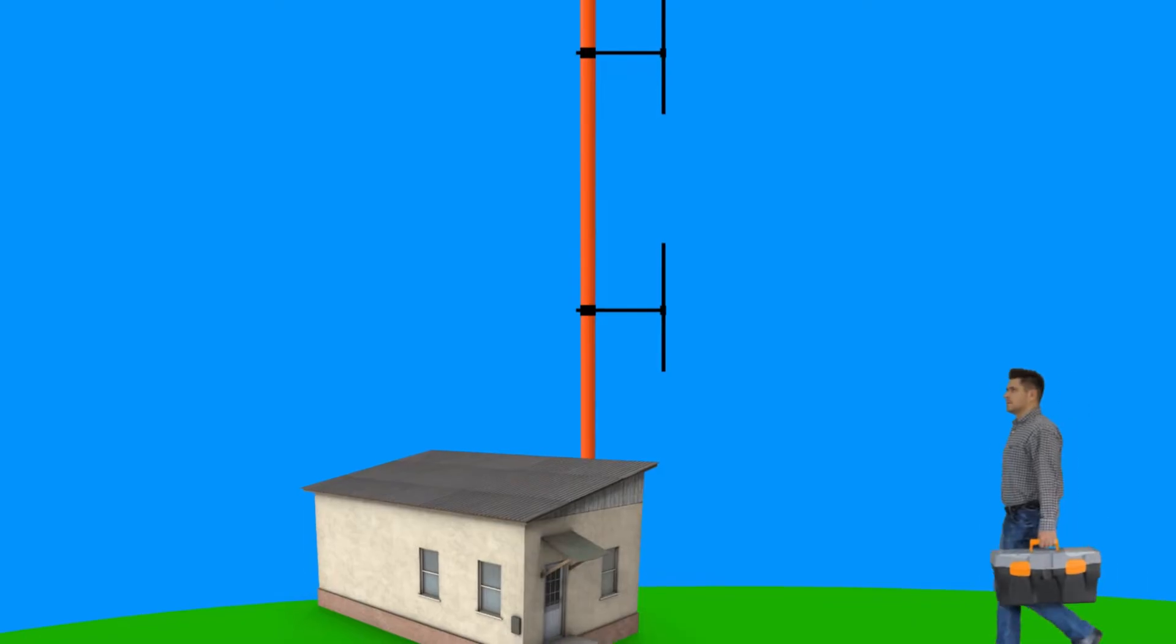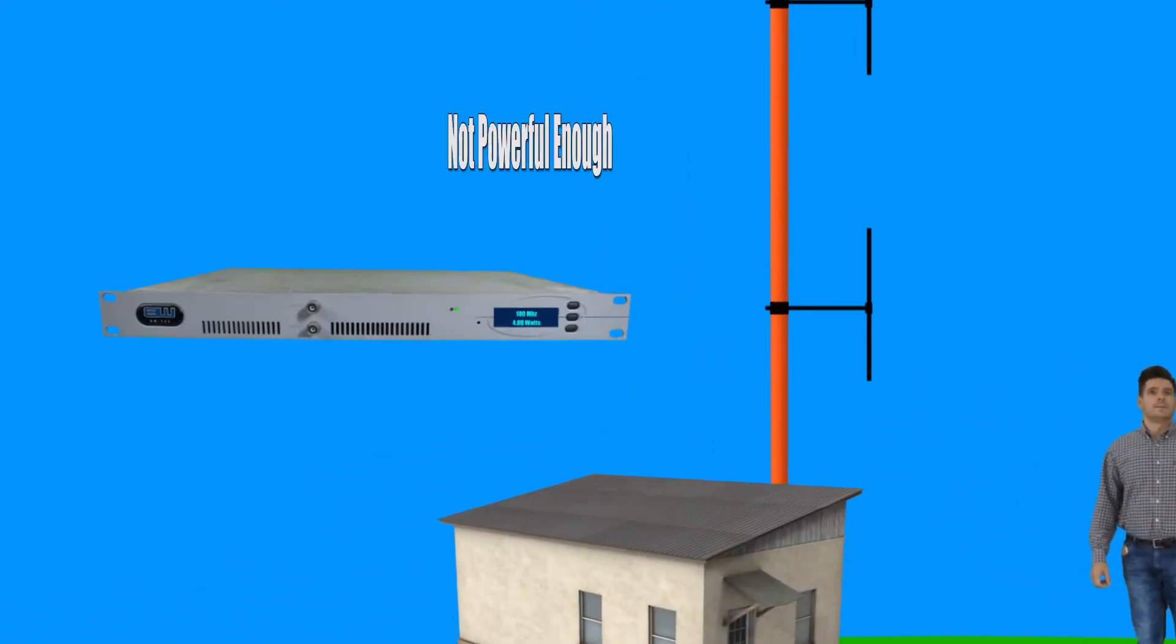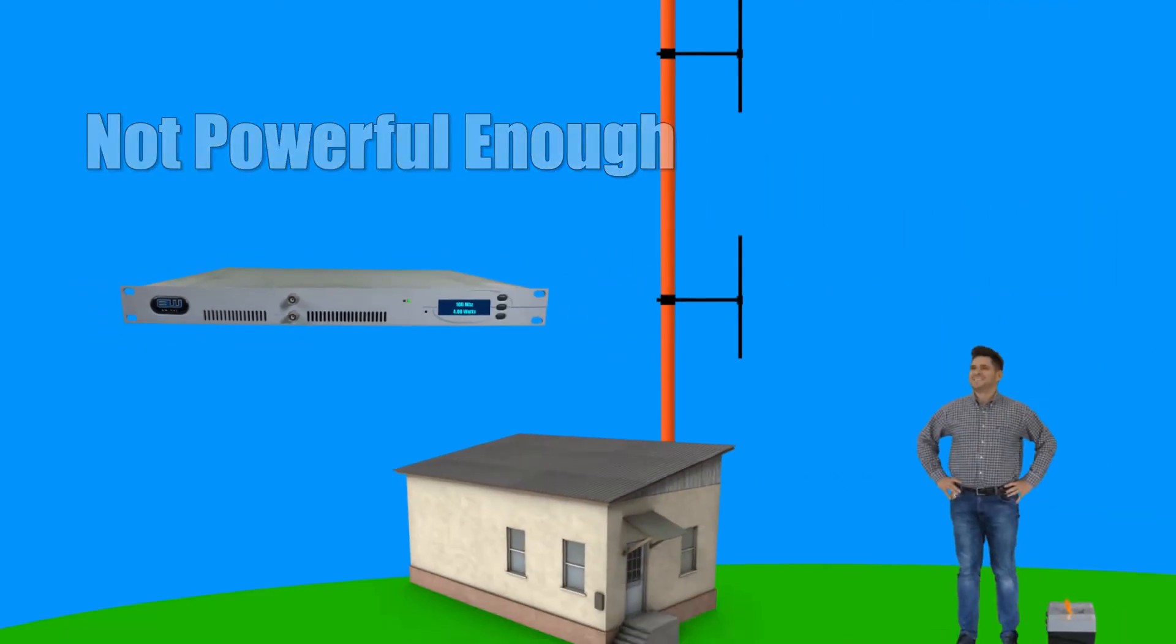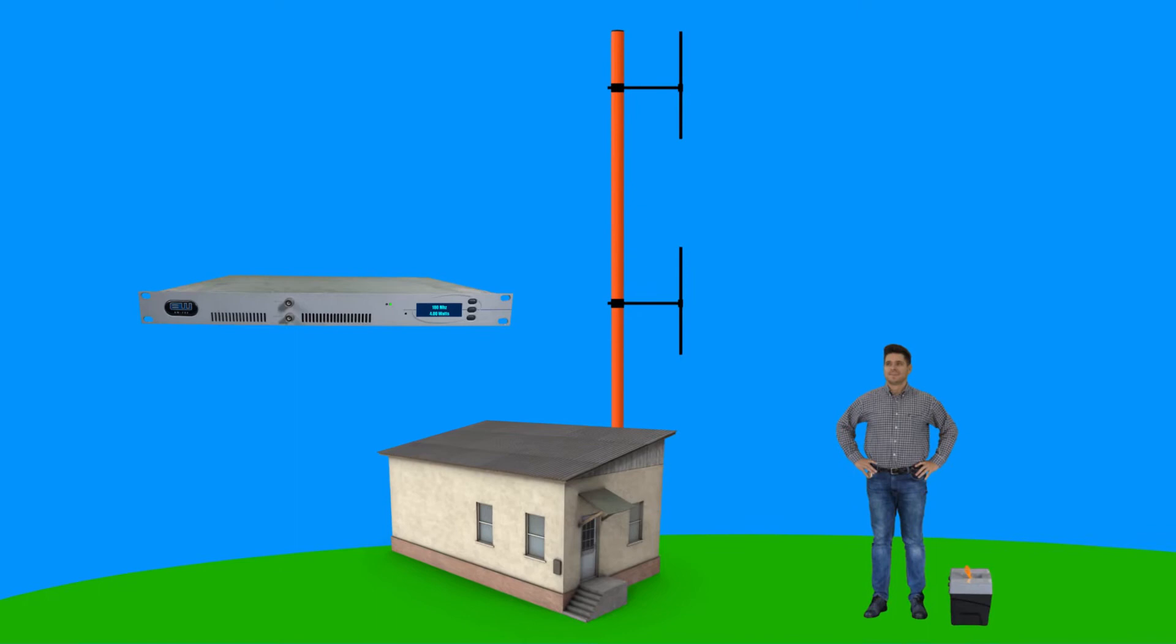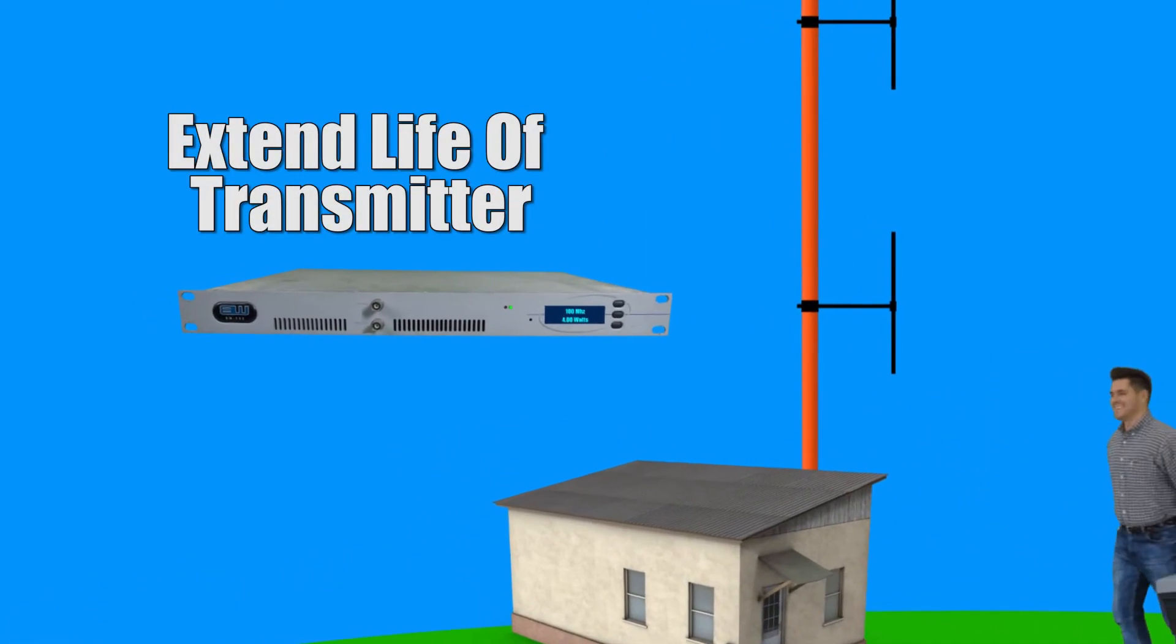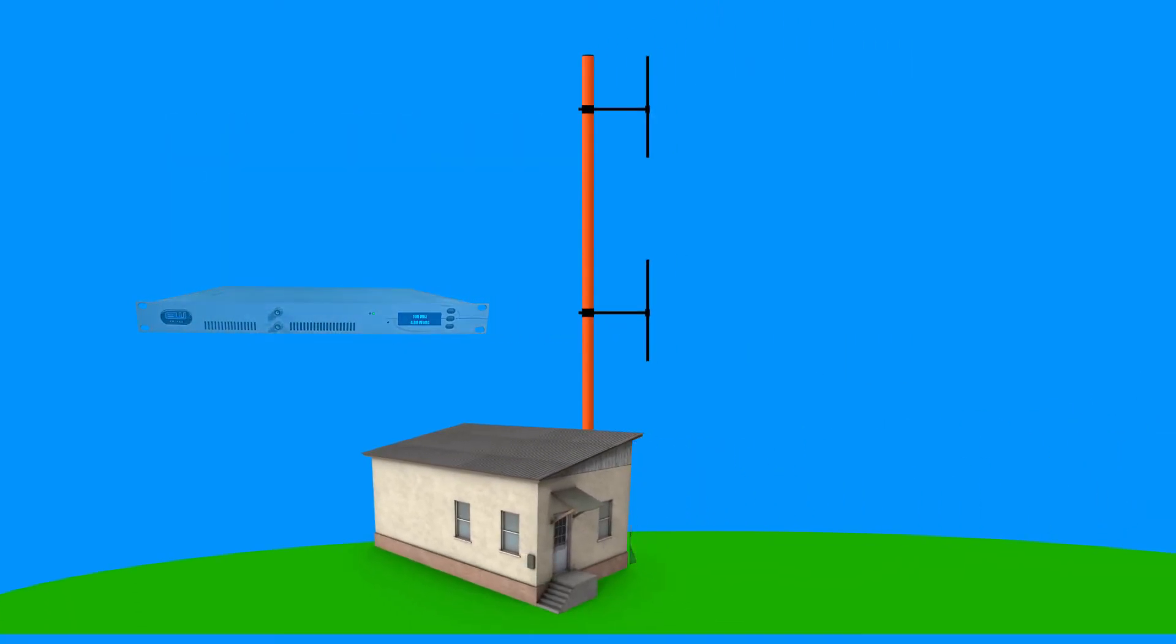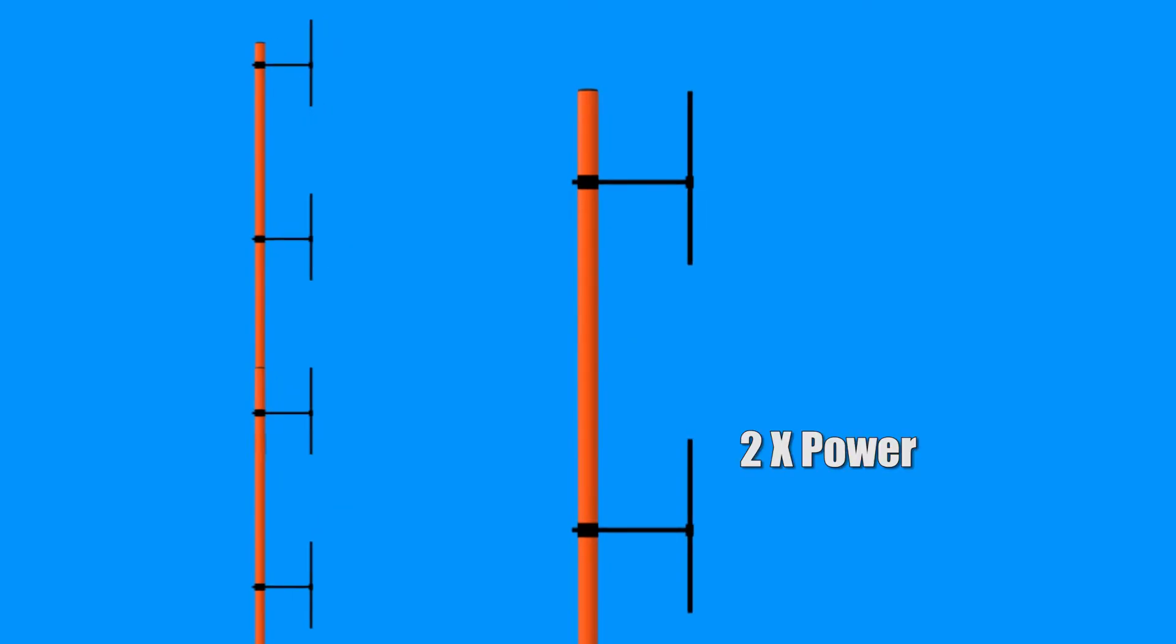When most newcomers to building radio stations decide to build an array, it is because their transmitter does not provide enough power, so it needs to be increased by adding more antennas. In some cases, people simply want to run the transmitter at a lower power level to extend the life of the transmitter. Whatever your reason, the antenna stack or array can double and quadruple the output power of the FM transmitter.